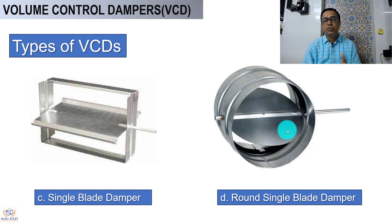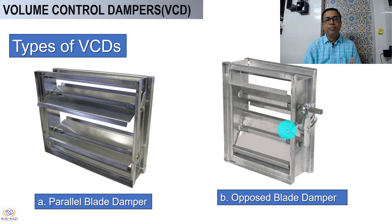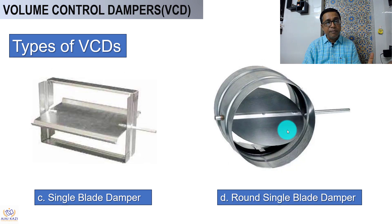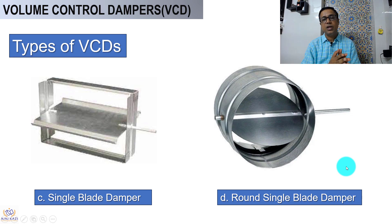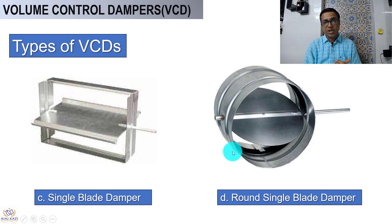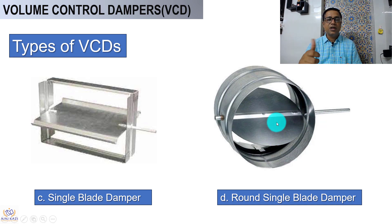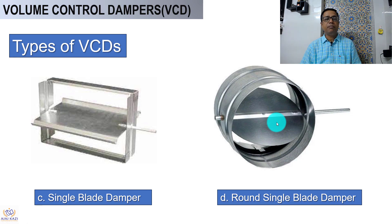The next type is a single blade damper — this is a single flap, as you can see. Then we have single blade round dampers used for round ducts. You can see a flap with a rod, and you can close and open these dampers. All of these are called VCDs.